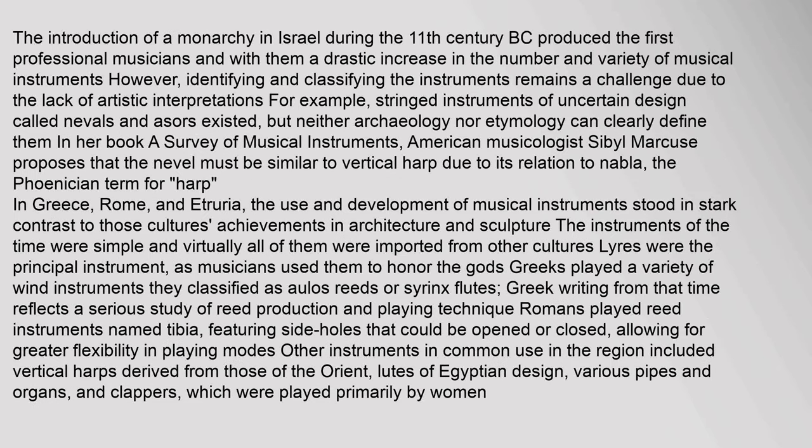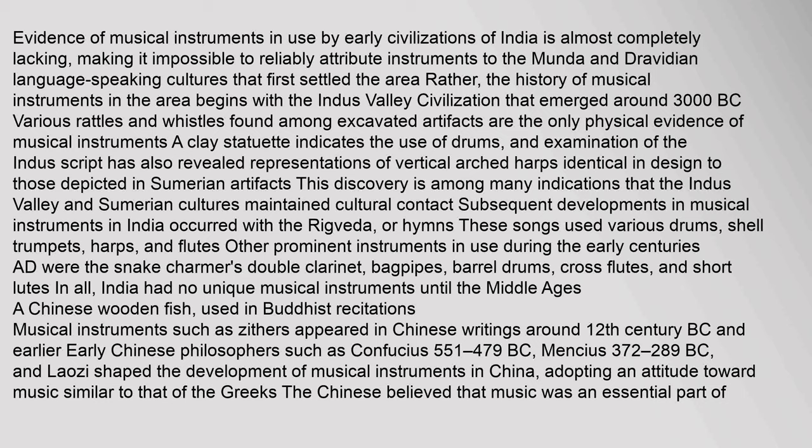Evidence of musical instruments in use by early civilizations of India is almost completely lacking. The history of musical instruments in the area begins with the Indus Valley civilization that emerged around 3000 BC. Various rattles and whistles found among excavated artifacts are the only physical evidence of musical instruments. A clay statuette indicates the use of drums, and an examination of the Indus script has also revealed representations of vertical arched harps identical in design to those depicted in Sumerian artifacts, suggesting the Indus Valley and Sumerian cultures maintained cultural contact.